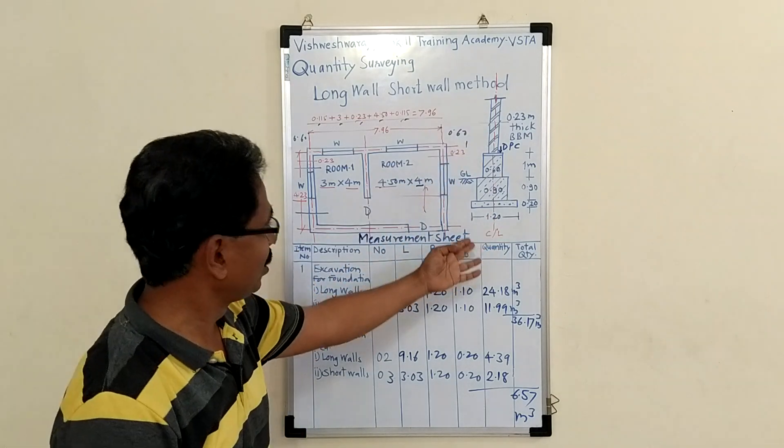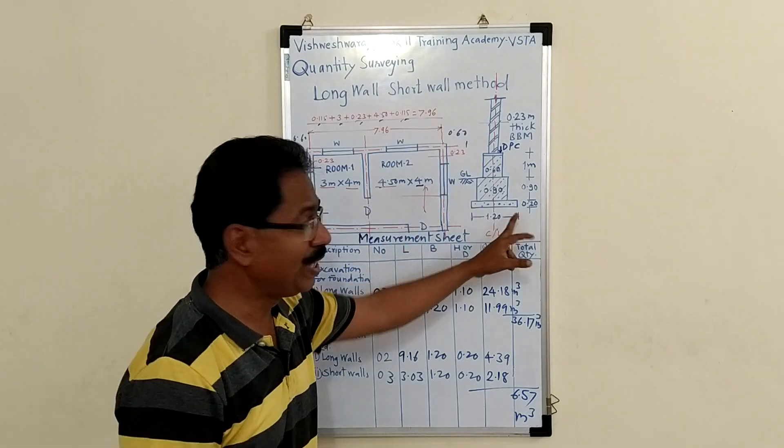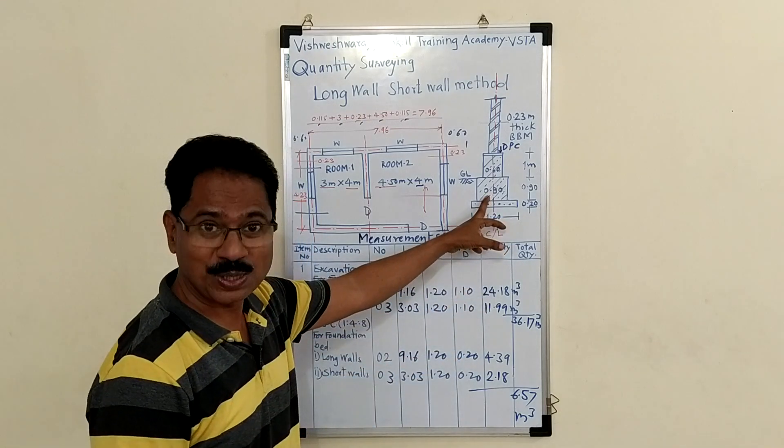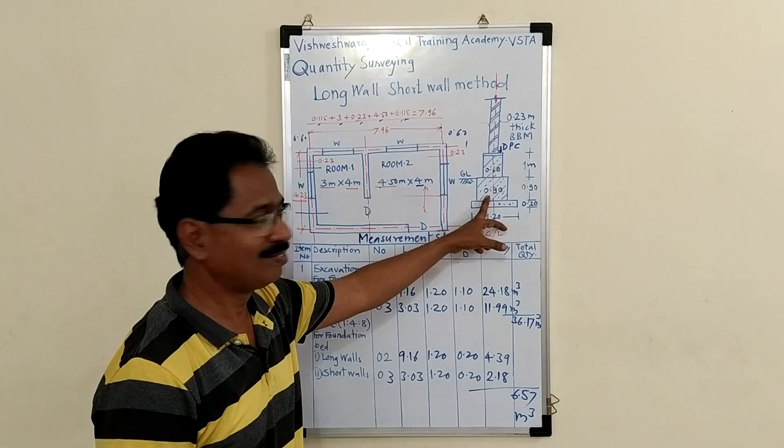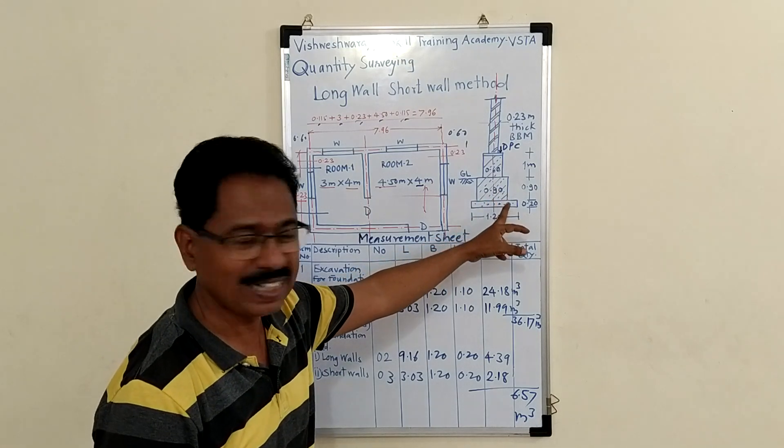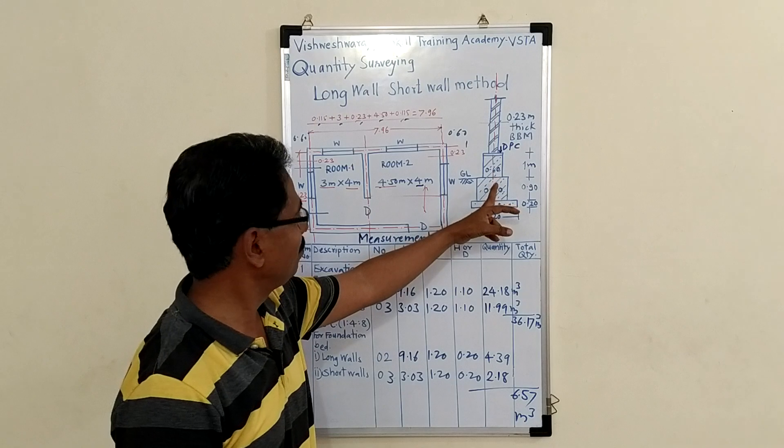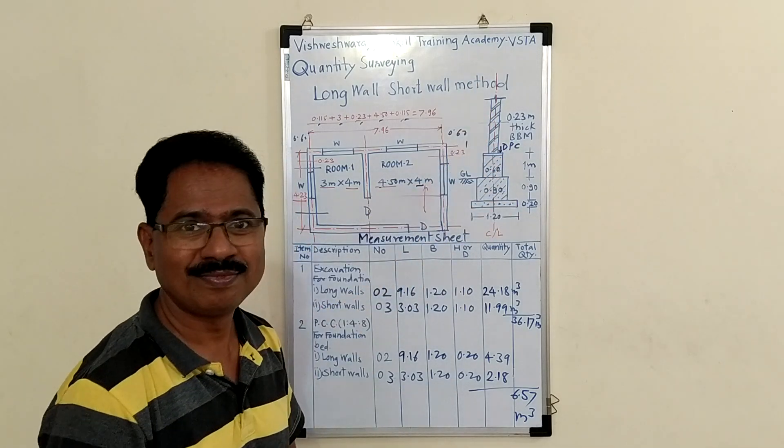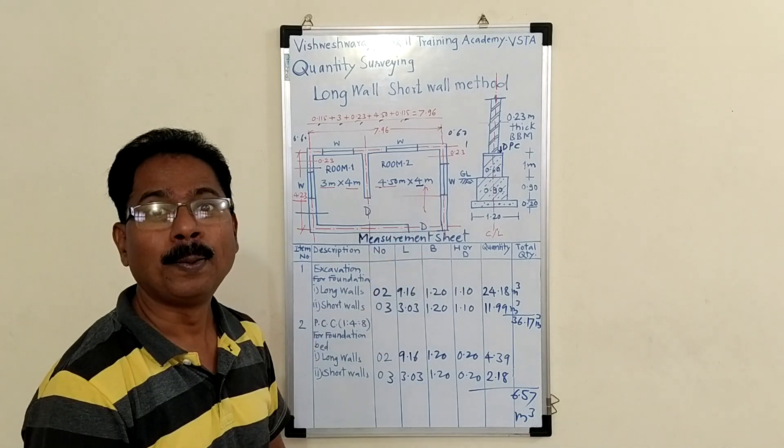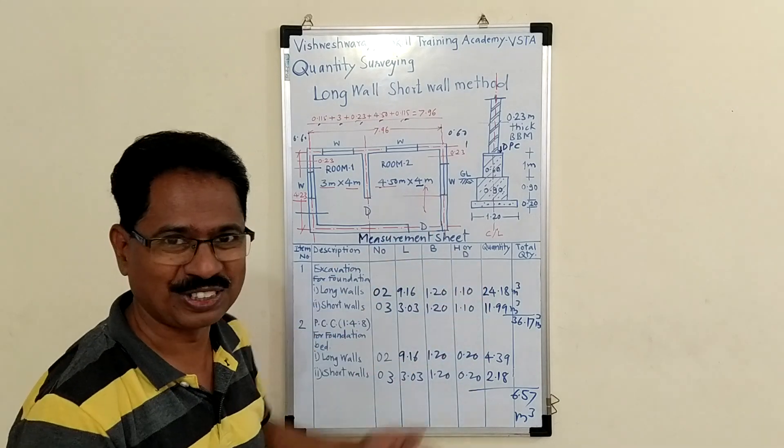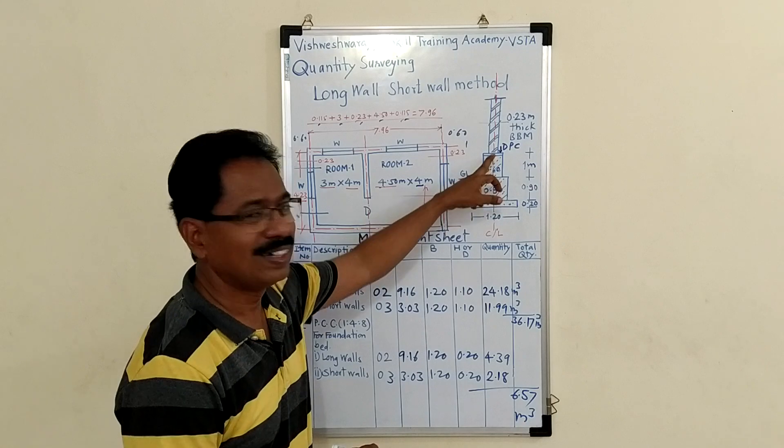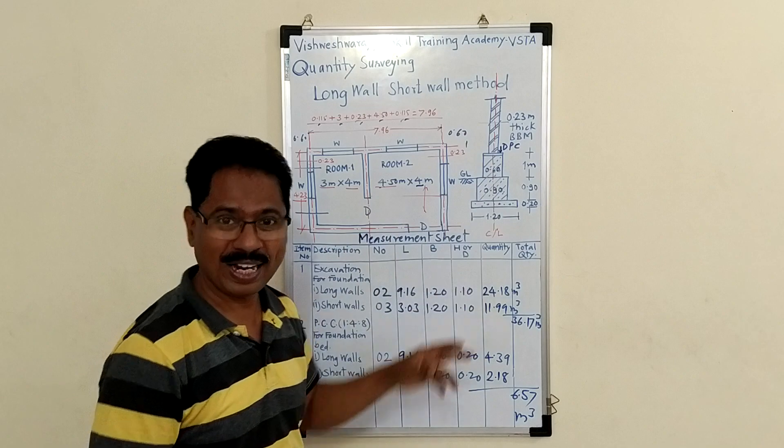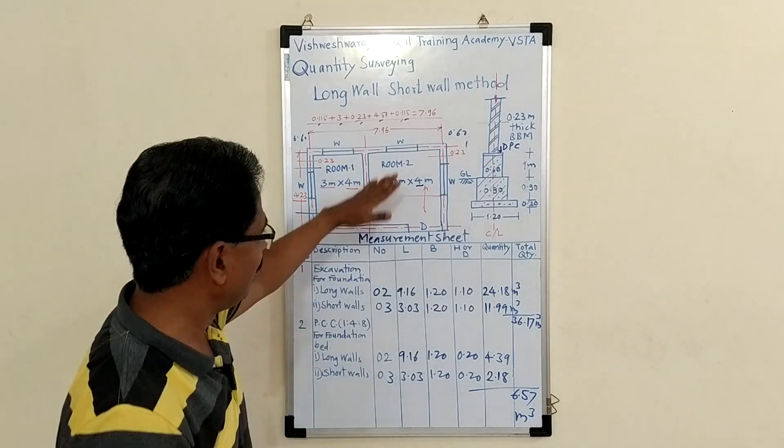In section you see width of excavation is 1.2 meter. This is UCR, and above you see brick wall in superstructure. Here is the item DPC, which means damp proof course. It is required in load bearing structure.